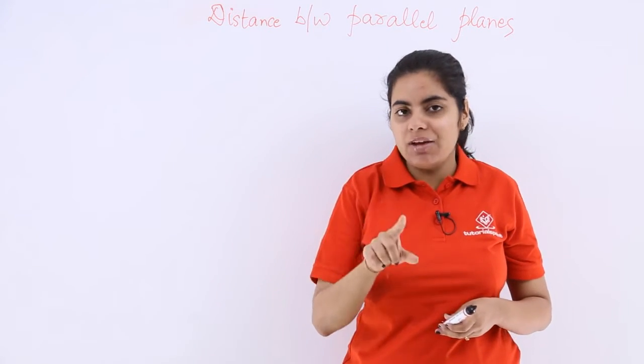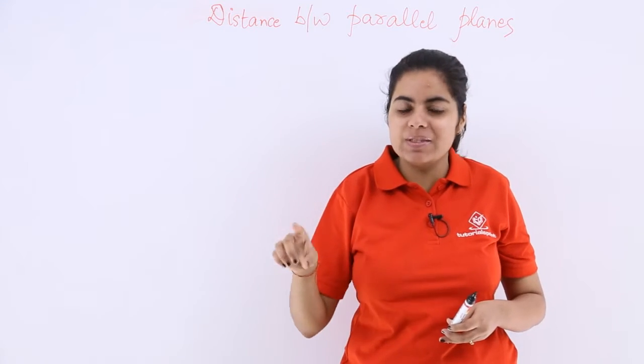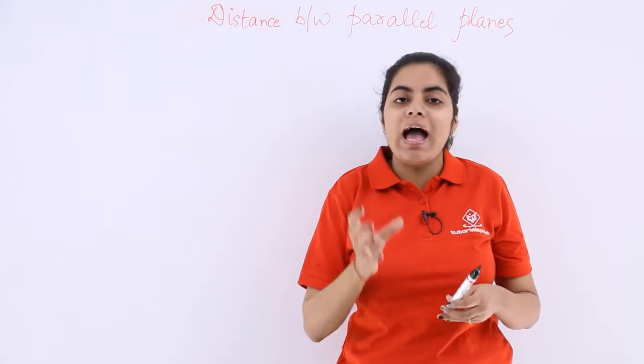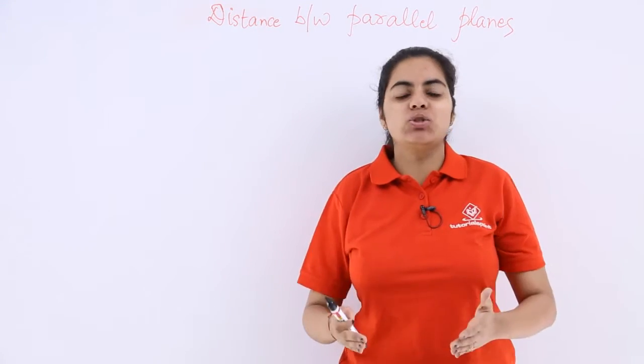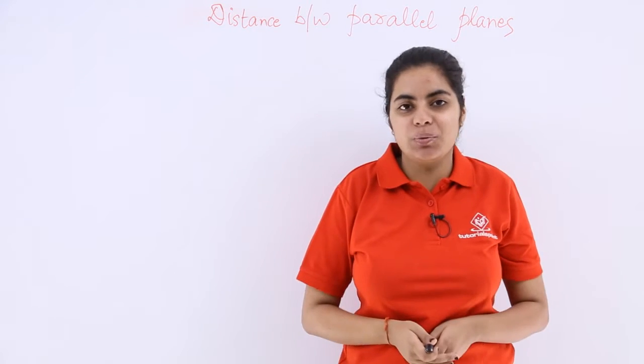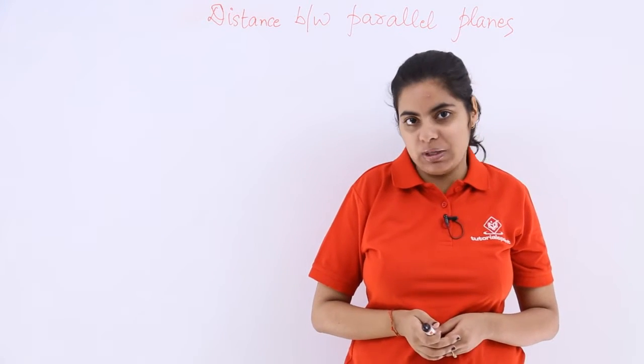So if we have two planes, a1x plus b1y plus c1z plus d1 equal to 0 and a2x plus b2y plus c2z plus d2 equal to 0, how to find the distance between the planes?